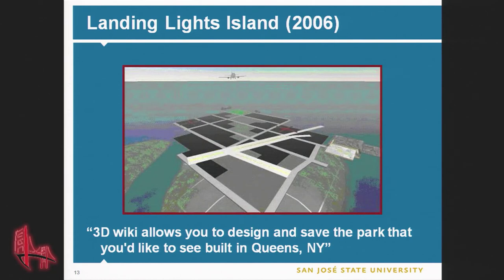Here's some precedent and background. New York Law School had a Second Life Island in 2006 where they created a 3D wiki. They rebuilt portions of Queens, New York and brought the public in to show them what that possible neighborhood in Queens would look like. Landing Lights is the name of the island, and that was New York Law School.